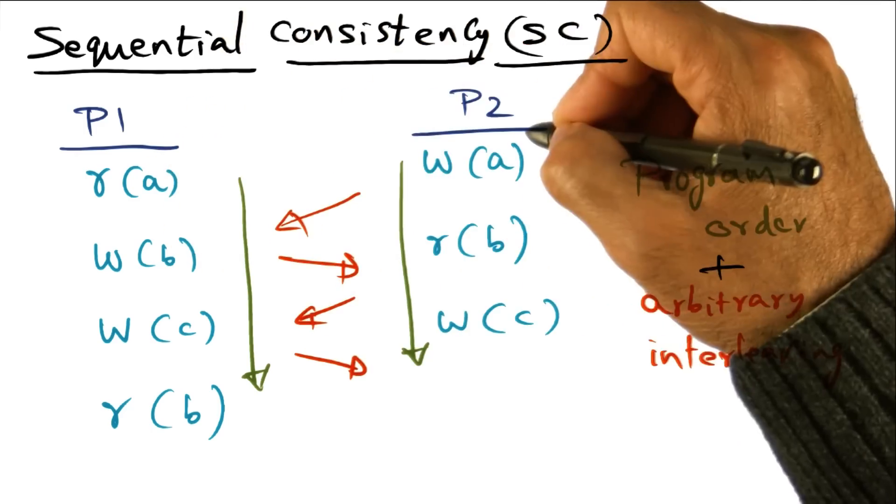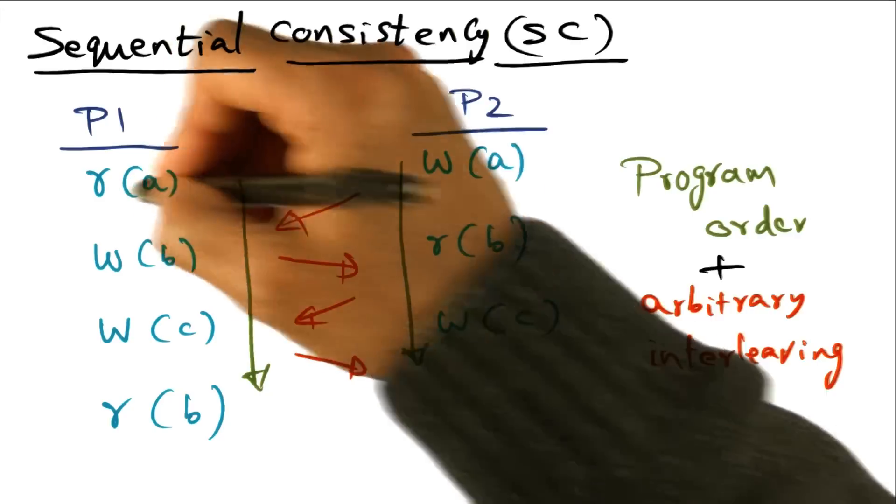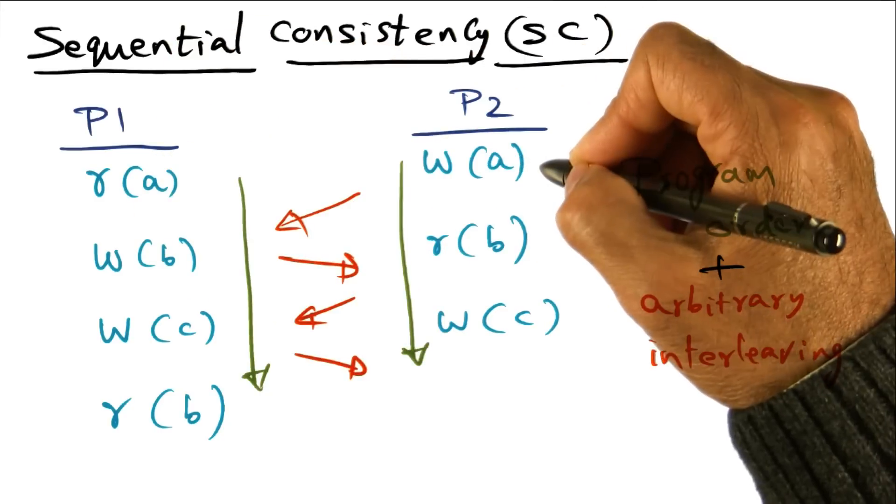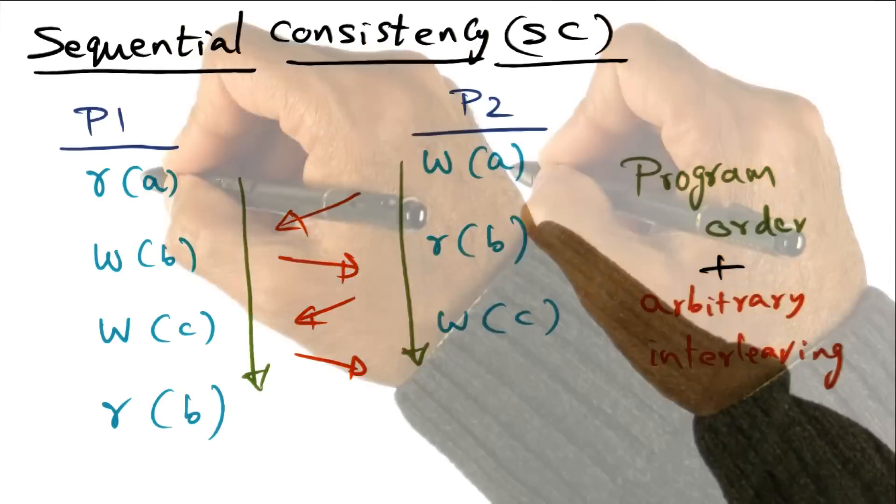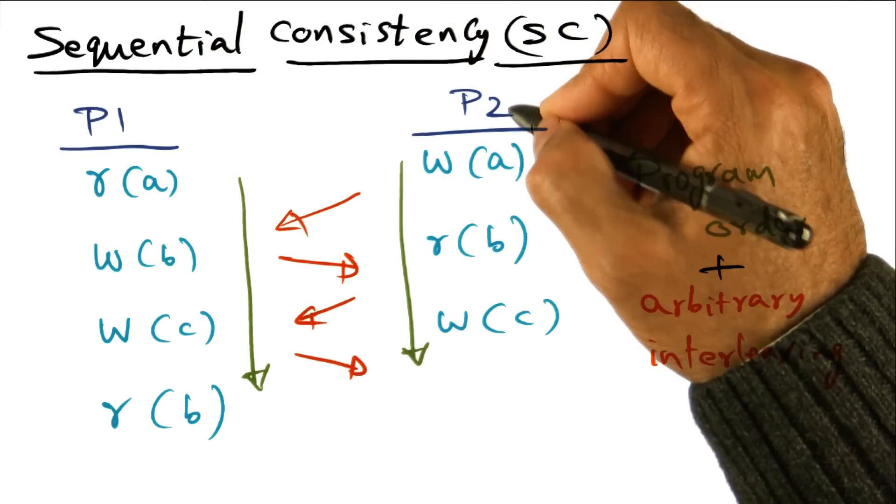If they are accessing exactly the same memory location, for instance, P1 is reading memory location A, P2 is writing to memory location A. What is the order between this read by P1 and this write by P2?